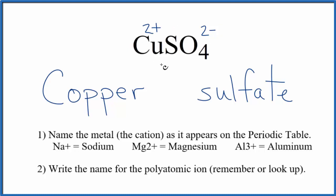So to show that the copper has a two plus charge, we put Roman numeral two with parentheses. And the name for CuSO4 is copper two sulfate.